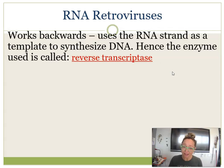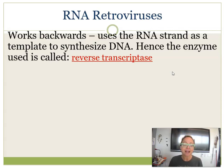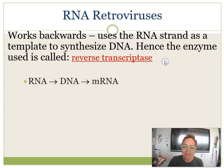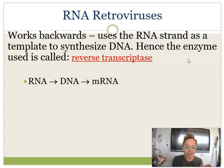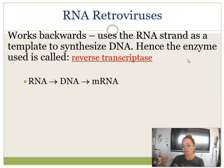An RNA retrovirus does not have DNA as its genetic material — instead it has RNA. So it's going to work backwards: it starts with RNA and then does reverse transcription, hence the name of the enzyme reverse transcriptase.